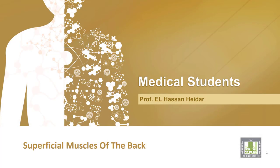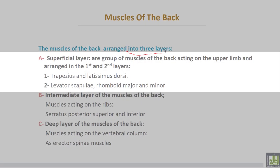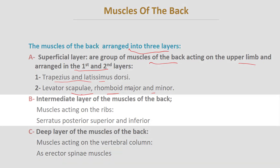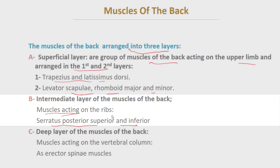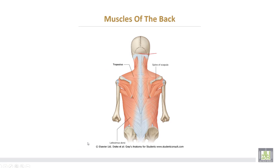The muscles of the back are arranged into three layers according to their action. The superficial layer consists of muscles acting on the upper limb, arranged in first and second sublayers: the first being trapezius and latissimus dorsi, the second being levator scapulae and rhomboids minor and major. The intermediate layer contains muscles acting on the ribs, such as serratus posterior superior and inferior. The deep layer contains muscles acting on the vertebral column, such as the erector spinae muscles.